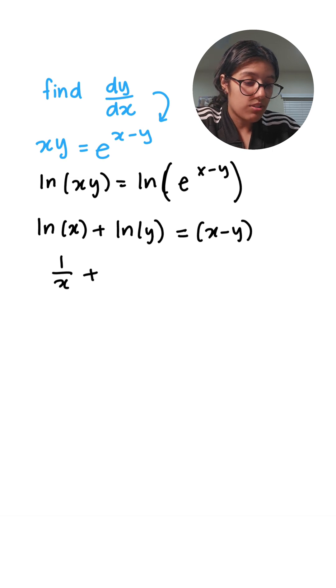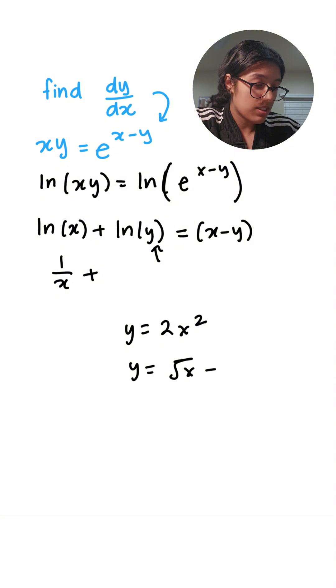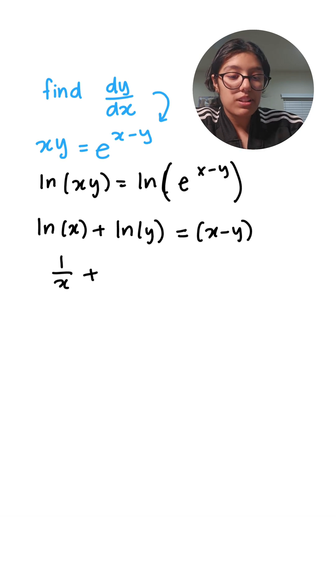For the derivative of natural log of y, remember we're differentiating with respect to x. But this y can be a function in terms of x. It could be y equals two x squared. It could be y equals square root of x minus one. We don't know what y is. And that is why we need to apply implicit differentiation.